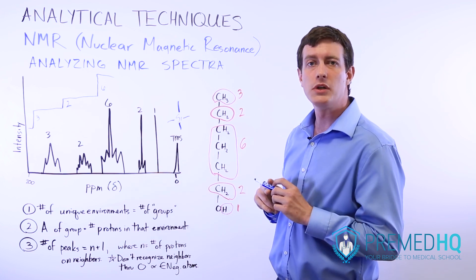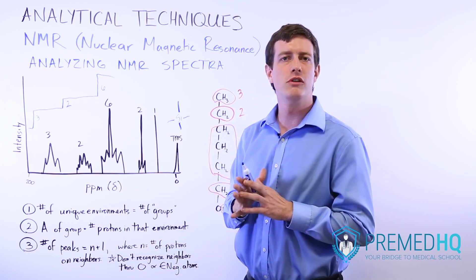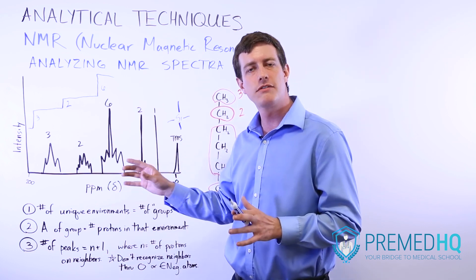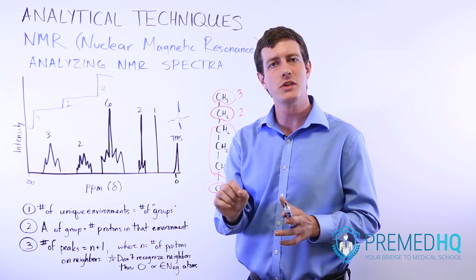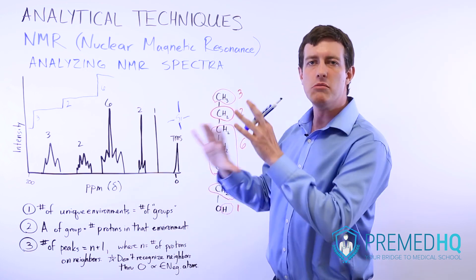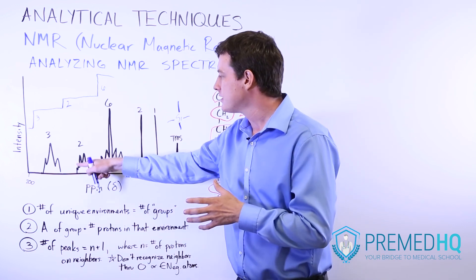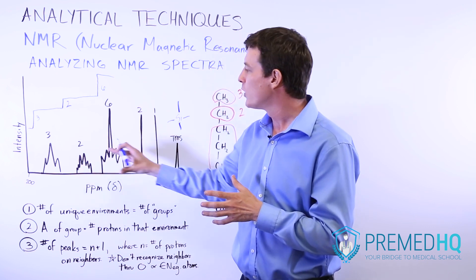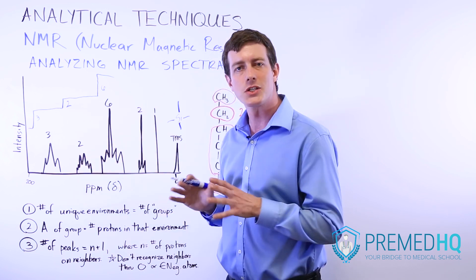You never recognize neighbors through an oxygen or through a very electronegative atom. Even if the neighbor is oxygen, you might not recognize a proton attached to that oxygen because the oxygen's high electronegativity cancels out the neighboring effect. This spin-spin splitting effect causes the slight deviations that result in multiple peaks — a more advanced topic we'll be covering.